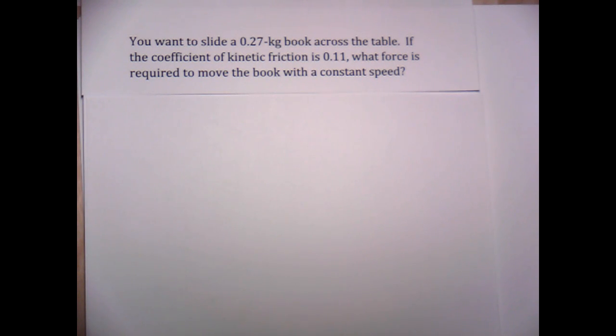In this problem, this is chapter 5, textbook question number 39, we're asked to find the force that's required to move a book with a constant speed across a table. And we're told that the mass of the book is 0.27 kilograms and that the coefficient of friction between the table and the book is 0.11.